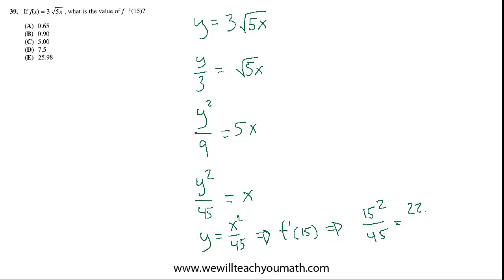15 squared is 225, and 225 divided by 45 is 5. So the best choice is c.